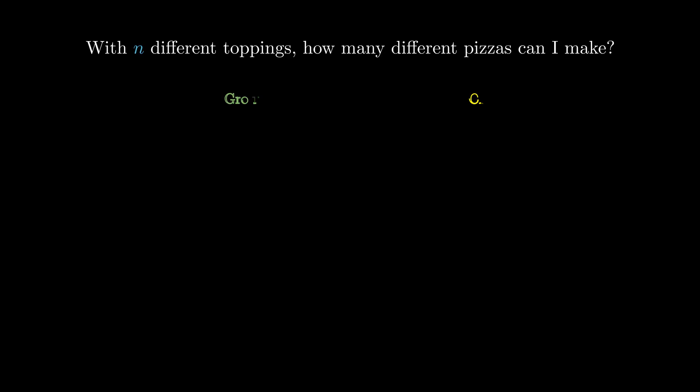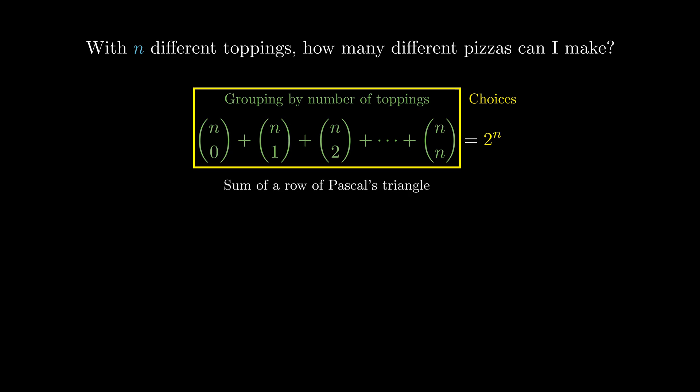Since we solved the exact same problem in two different ways, and the problem can only have one correct answer, both of these methods should yield equal results, proving that this expression, which we obtained from our first method, and this expression we obtained from our second method, must be equal. The left side is a sum of a row of Pascal's triangle, and this now proves that the sum is a power of two.